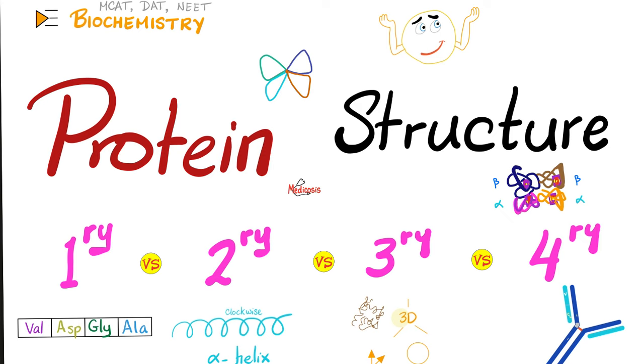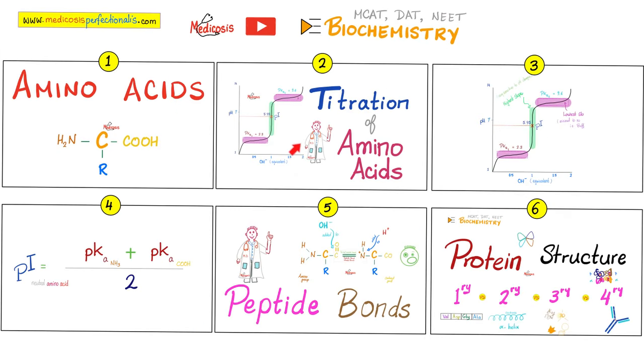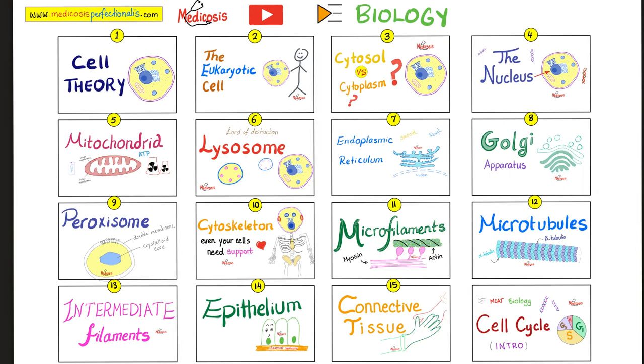Also, antibodies. They have two light chains and two heavy chains. A quaternary structure. This is my biochemistry playlist. Please watch these videos in order, and please watch this playlist after finishing the biology playlist first.